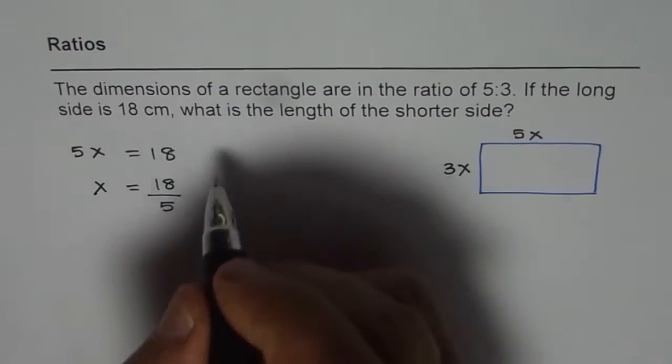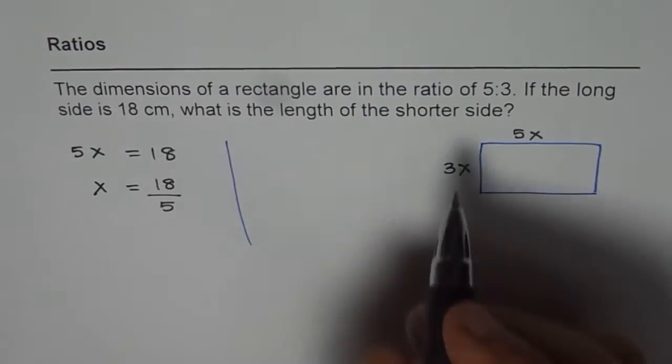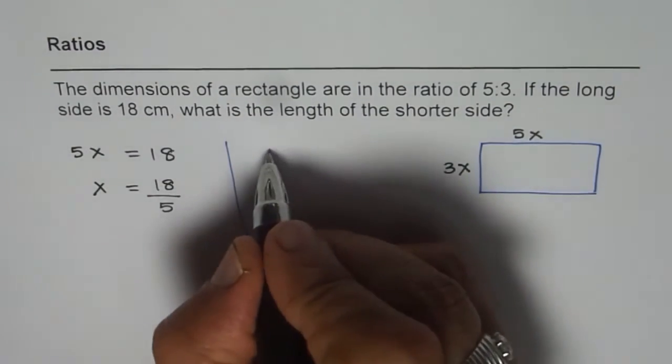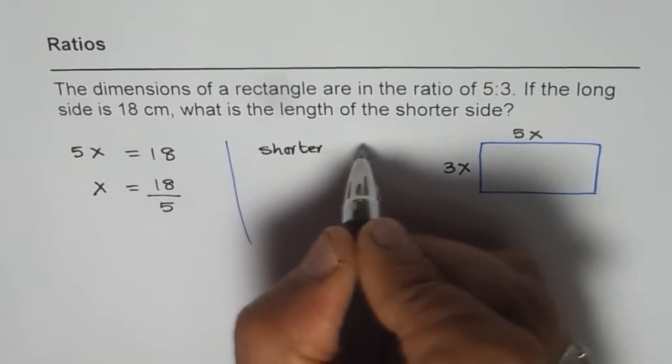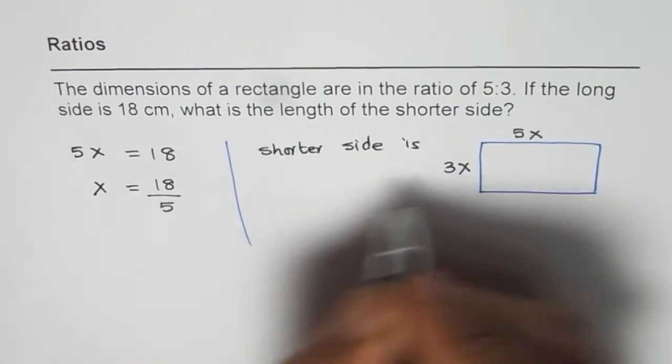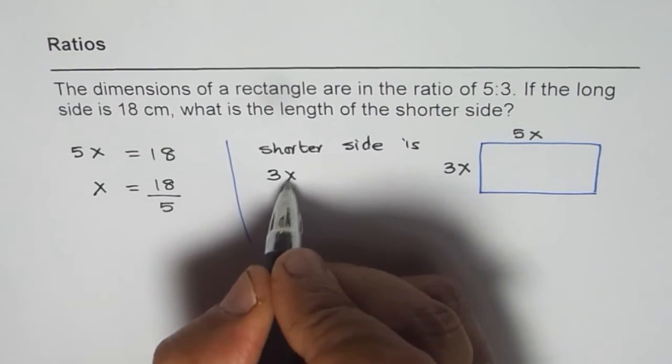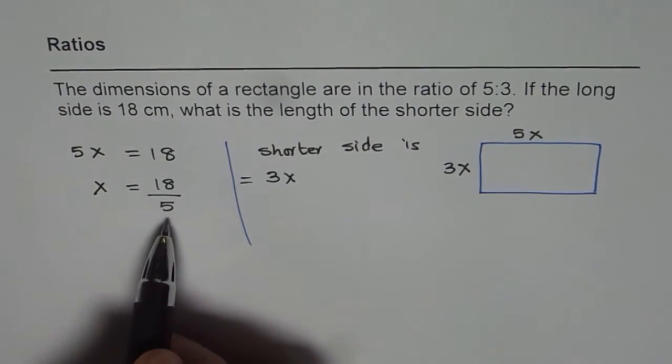So what is the shorter side? The shorter side is 3 times x. Is equal to 3 times x. But x is 18 over 5.